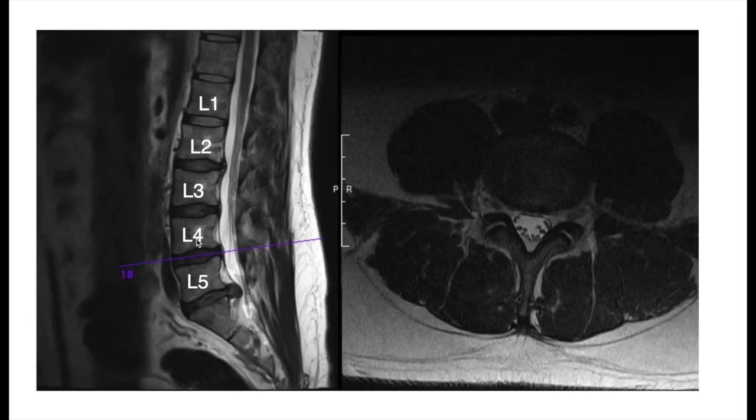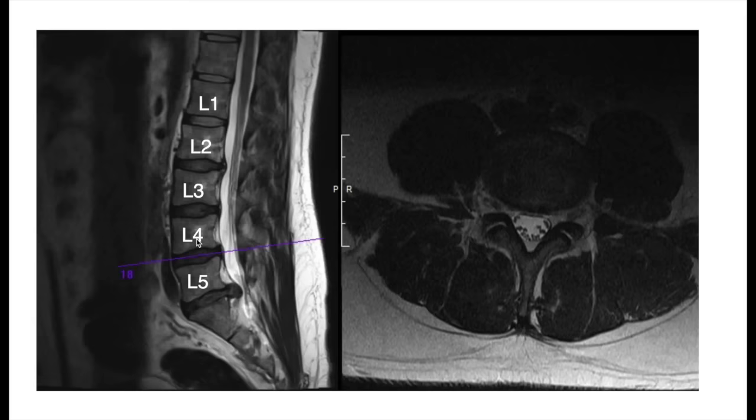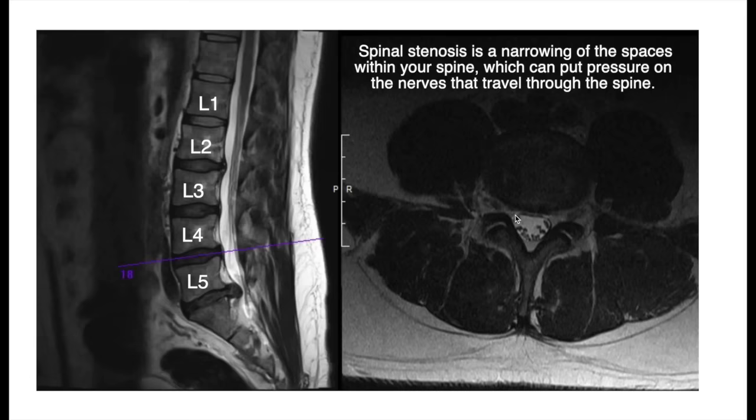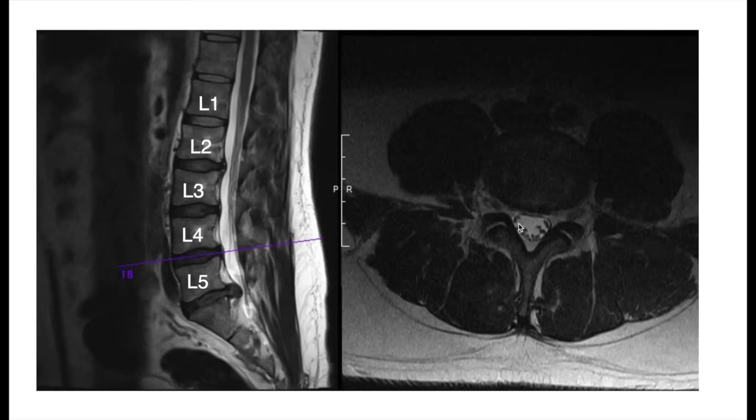If we carry down to the L4-L5 level — this is the fourth vertebra and this is the fifth vertebra — you can see the nerves have a little bit less room. We call that stenosis. There's less room and there are structures pressing on the nerve. Usually when that happens, the patient is going to have pain, discomfort, or weakness.